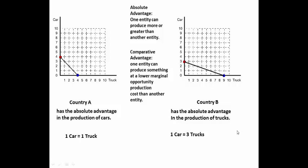To figure out which one has the lower marginal opportunity production cost, we're going to put an arrow going over here and circle, an arrow going over here and circle, and go back to the definition. Which country can produce a car at a lower marginal opportunity production cost? It's quite obvious that Country A has the comparative advantage in cars.